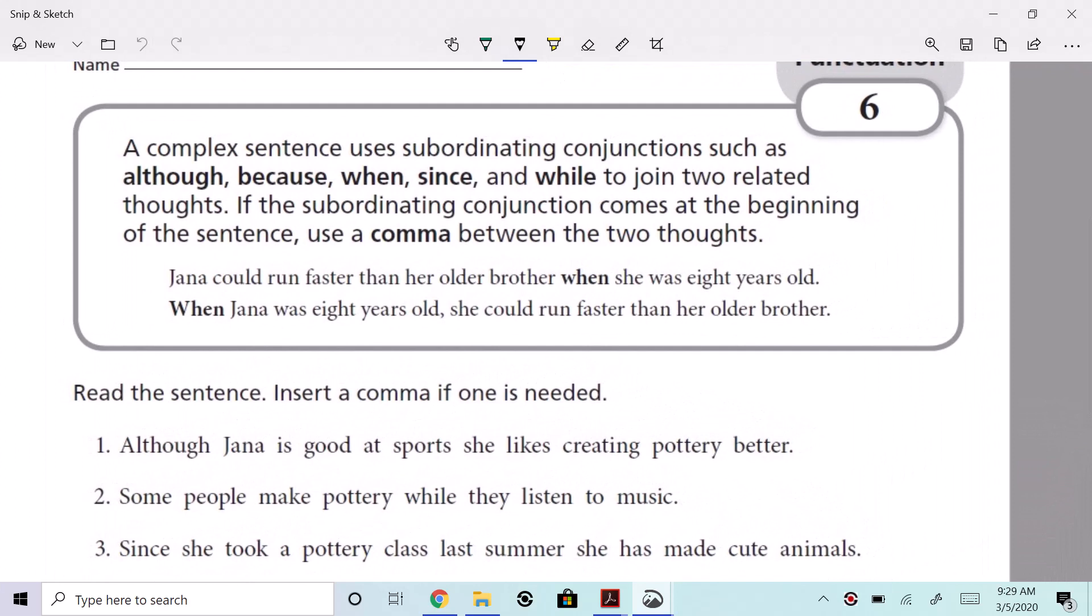So we're going to join two related thoughts. Listen, a subordinating conjunction comes at the beginning. It's subordinate. Look: although Janna is good at sports. What if I just said that and ended it? Although Janna is good at sports. And then I just looked at you guys like this. Look at me when I do this. Ready? Take those out.